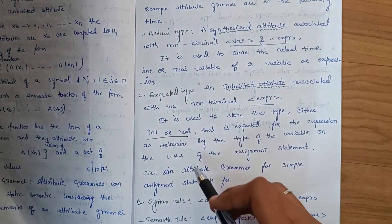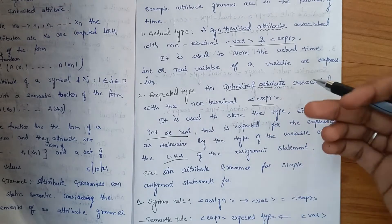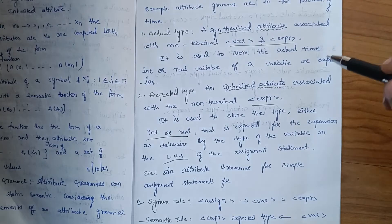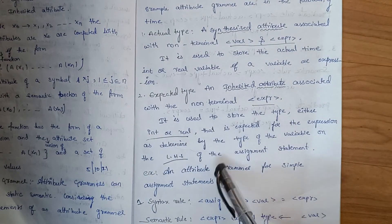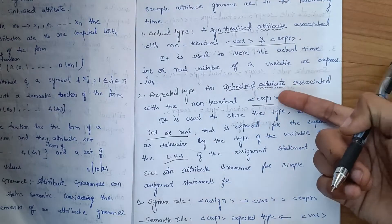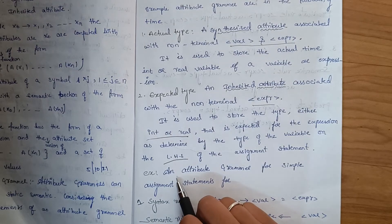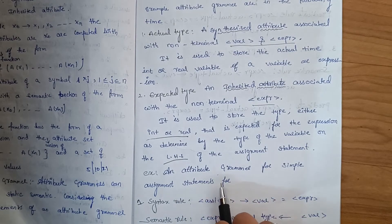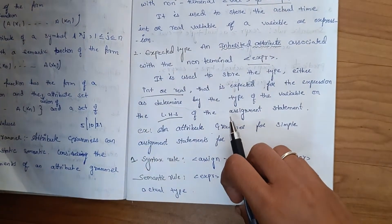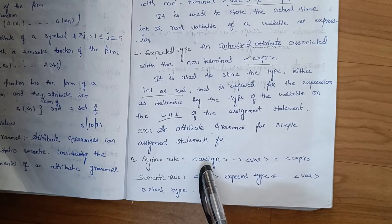On the LHS we determine the type. We determine the attribute grammar for a simple assignment statement. The syntax rule is: statement assigns next variable. The semantic rule involves expression expected type derived from variable actual type. We determine this through the attribute grammar rules.